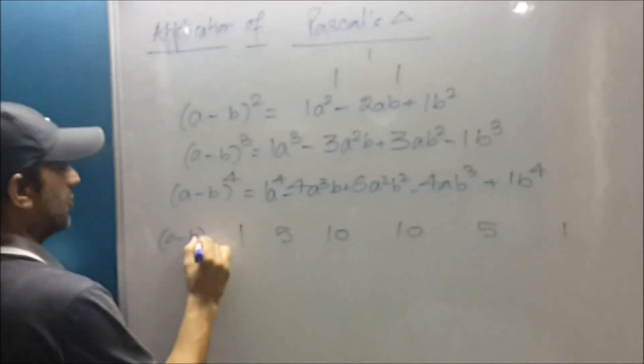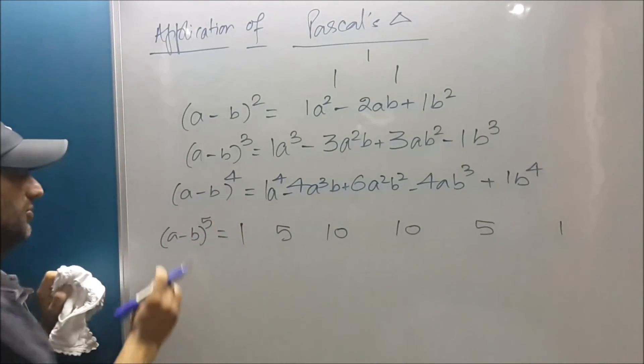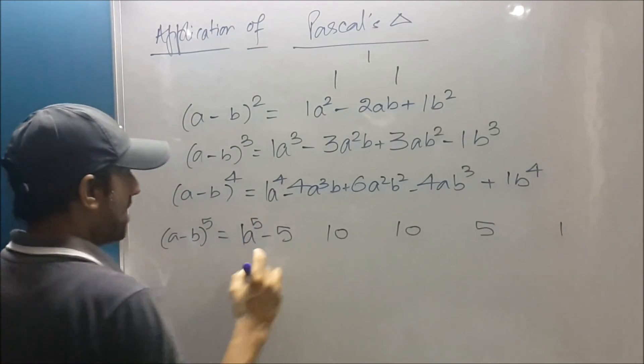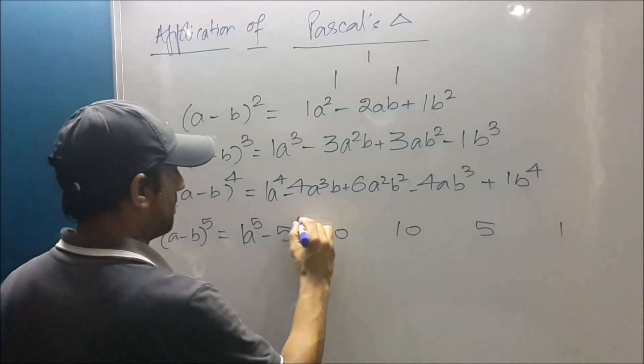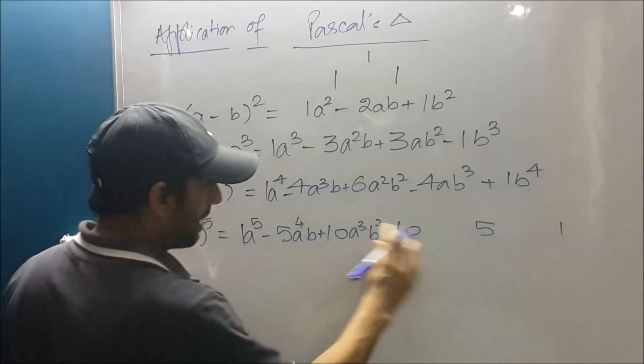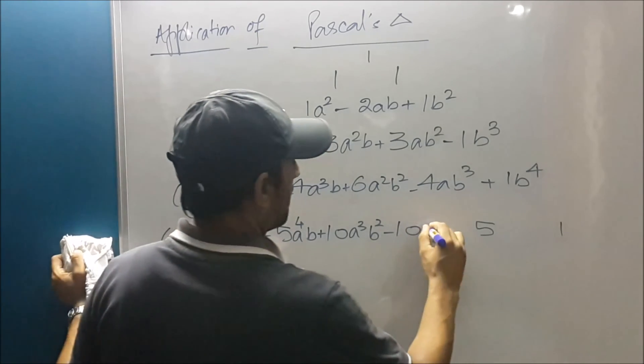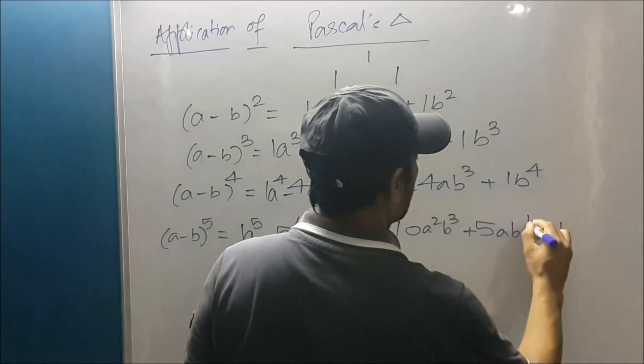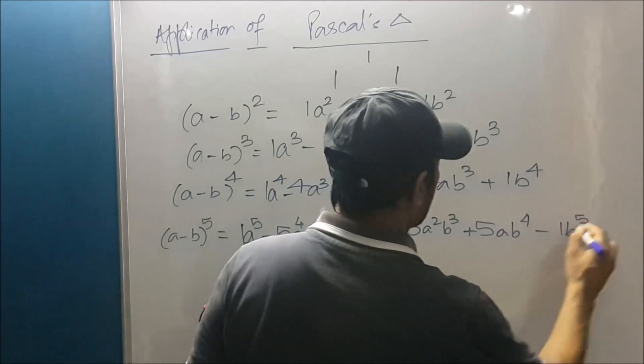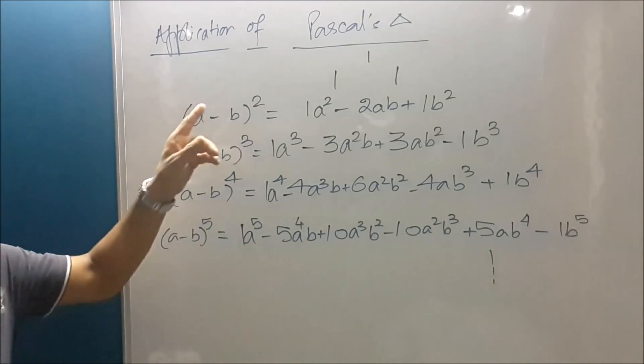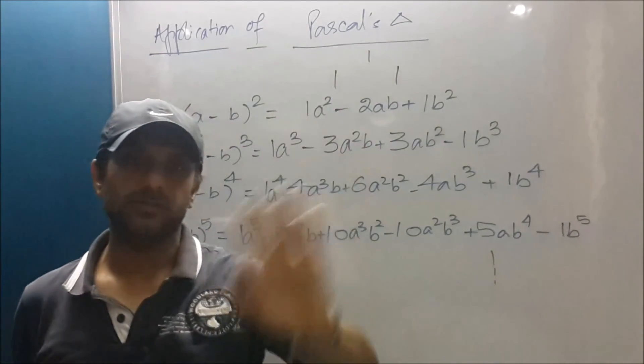And once again a project for you, a tiny project: (a - b)⁵. So a⁵ - 5a⁴b + 10a³b² - 10a²b³ + 5ab⁴ - b⁵ and so on. It's so easy and simple. Thanks to Pascal and Pascal's Triangle. Bye-bye.